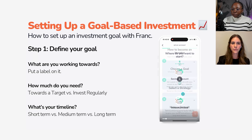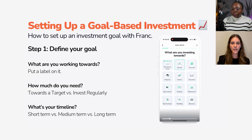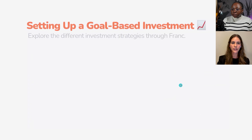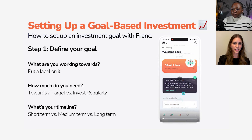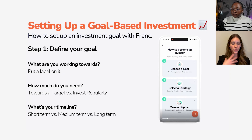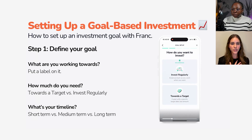Once you go to investment goal, the app is going to go through the steps very quickly — it's a three-step process. And then we're going to get to 'What are you investing towards?' When you get to that screen, that's where you really put a label on what you're investing for. If you want to be a millionaire in your 40s, we're going for wealth.